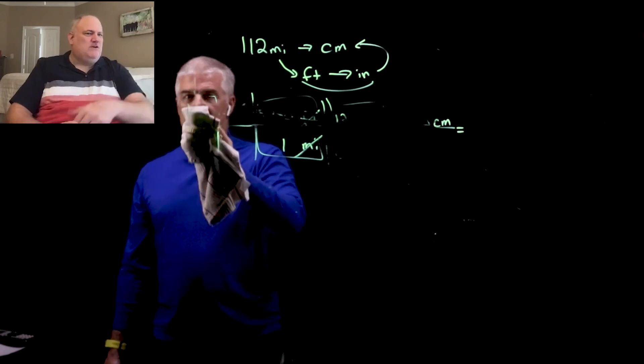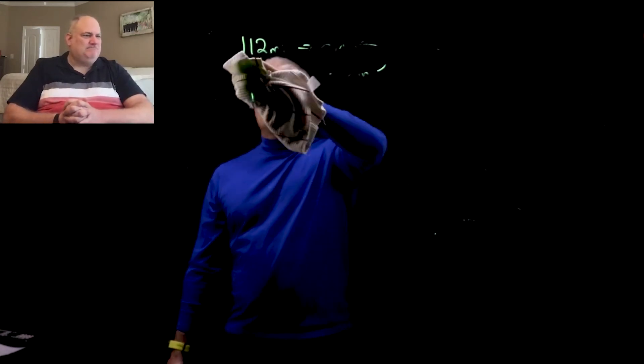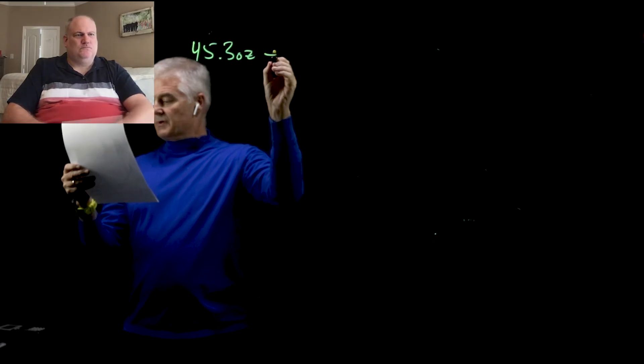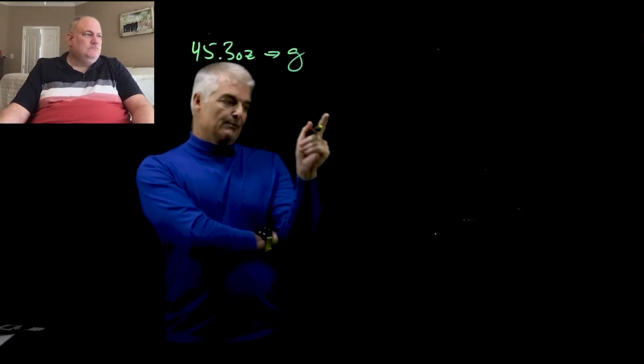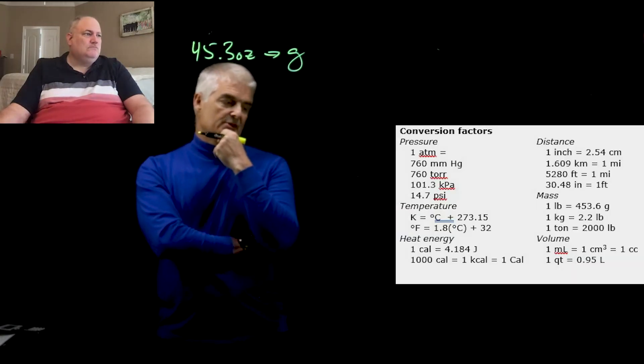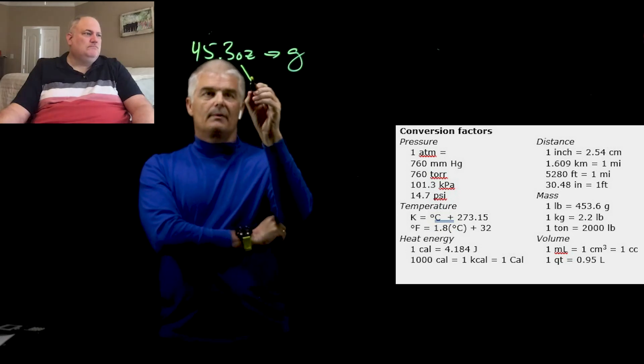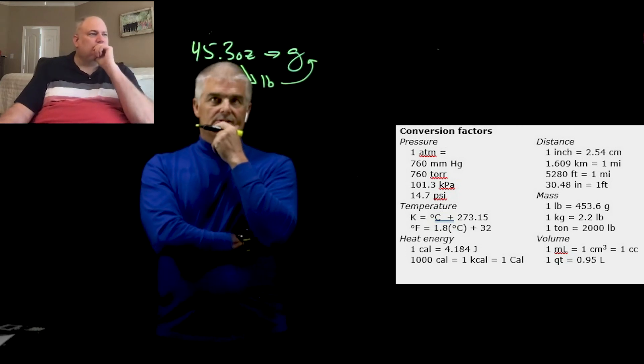By the way, we've been doing problems that only have ones on the bottom, but that's not always going to be the case, Mr. Bergman, correct? Well, that's going to come up in the next video. All right. And the last problem here is we're going to take 45.3 ounces, and we're going to convert it to grams. Now, this one is, again, we don't have ounces to grams over here on our table, but we have ounces to pounds. Do you guys see that? So, we can go from ounces to pounds, and then pounds to grams.